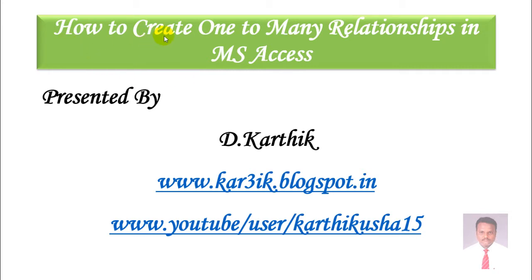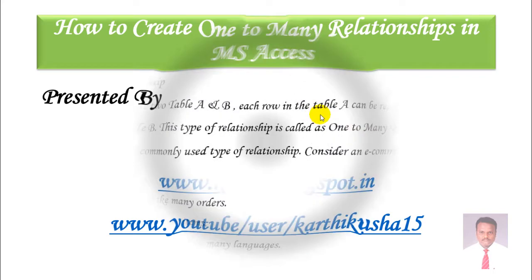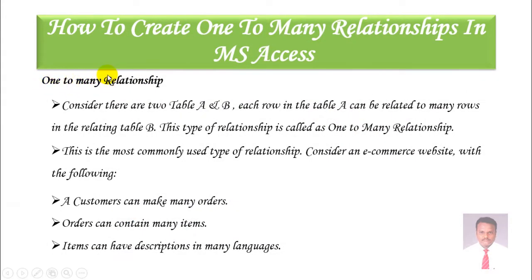How to create a one-to-many relationship in Microsoft Access. So what is a one-to-many relationship? Let us consider there are two tables, table A and table B. Each row in table A can be related to many rows in the relating table B. This type of relationship is called a one-to-many relationship.